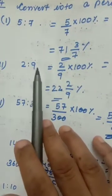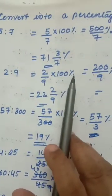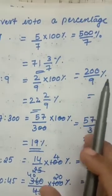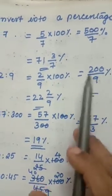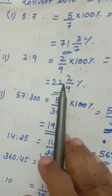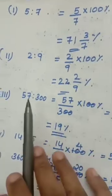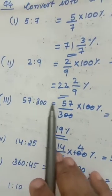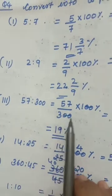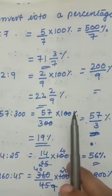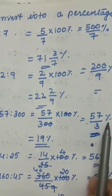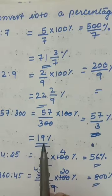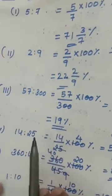2 ratio 9: 2 by 9 multiplied by 100 percentage. You cannot cut out. Then 200 by 9 percentage — divide it, you get 22 and 2 by 9 percentage. Like that 57 ratio 300: 57 by 300 multiplied by 100 percentage gives 57 by 3 percentage. Divide it and you get 19 percentage.